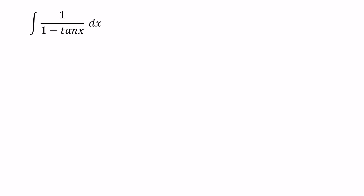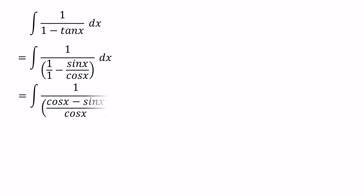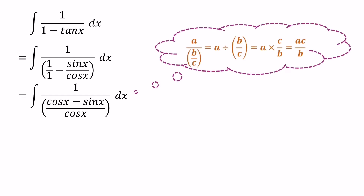In this question, first of all we can write tan x as sin x over cos x, and 1 as 1 over 1. Then we can get a common denominator of the denominator, and write cos x minus sin x over cos x as the denominator. The denominator of the denominator becomes the numerator, so the numerator value is cos x. We can write the integral as cos x over cos x minus sin x.